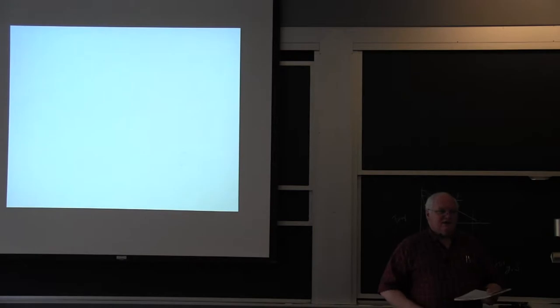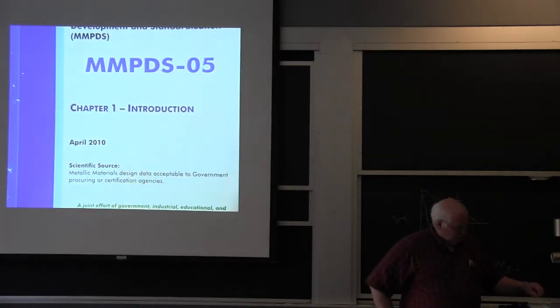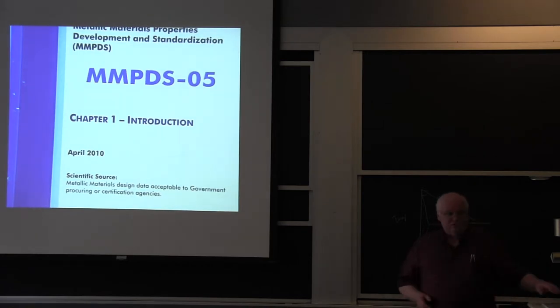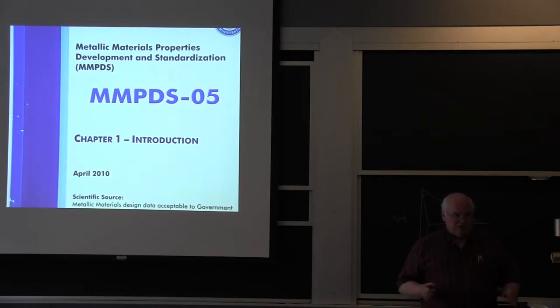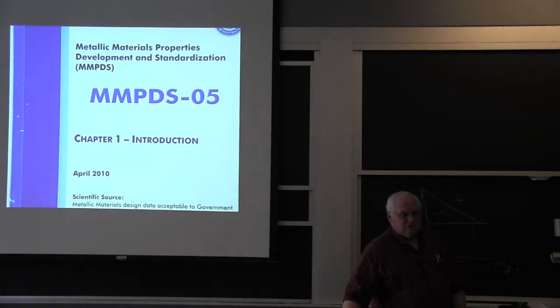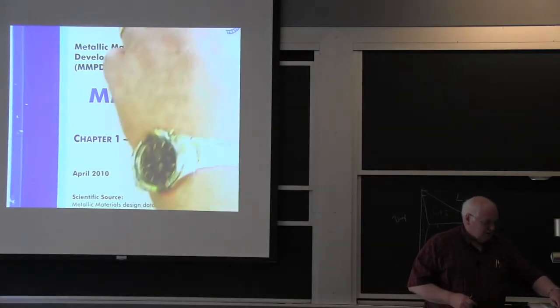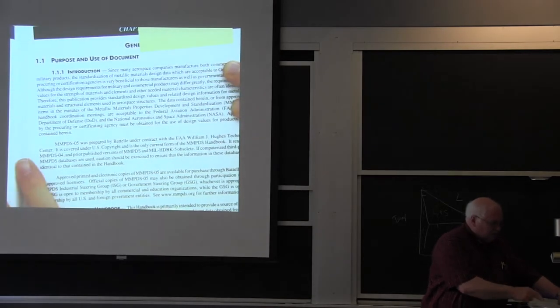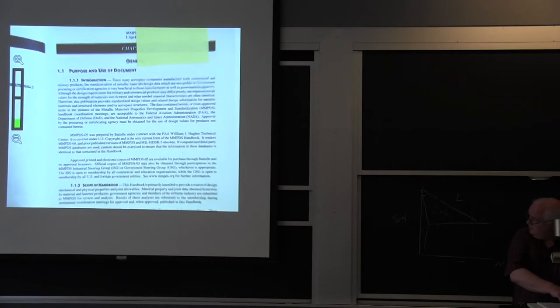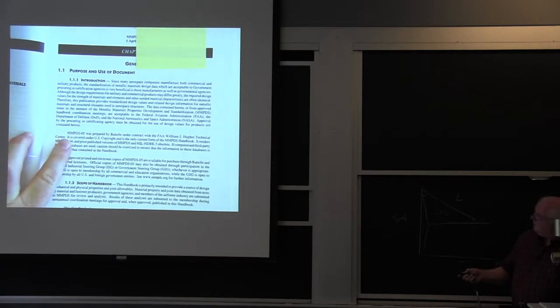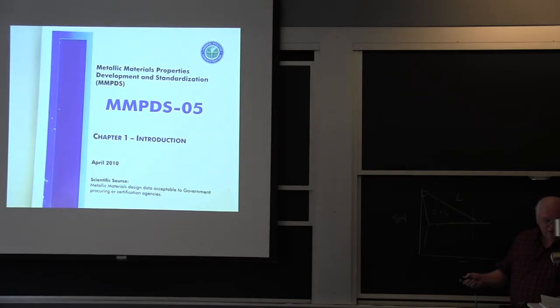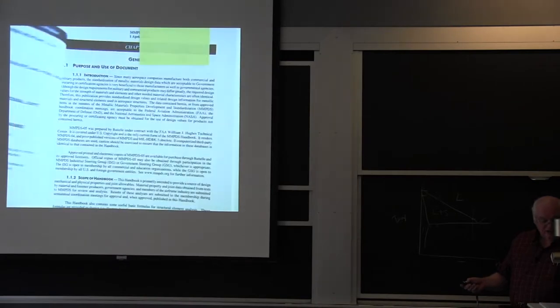If you like to have scientific data or engineering data on your computer, there is nothing cheaper than buying technical literature from the US government, because they have to sell it at cost. And if you download it, the cost is zero. So what used to be Mill Handbook 5, for about 40 years, is a 15 volume set of the mechanical properties to be used for design of aircraft. So if I want to know about aluminum, this is one of the places to go. It used to be Mill Handbook 5, it's now called Metallic Materials Properties Development Standardization, MMPDS-05.